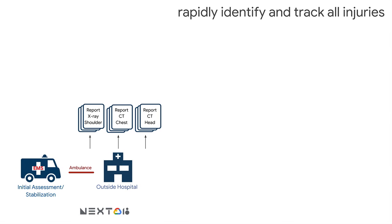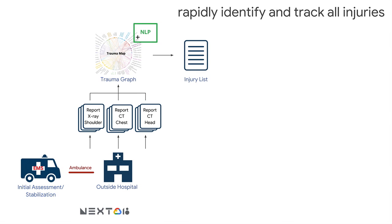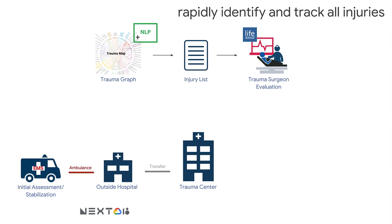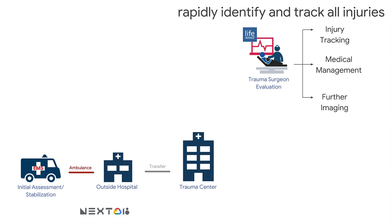We can put that directly into the existing trauma workflow. When a patient is injured, they go from the field to a nearby hospital, where they receive multiple imaging modalities — an X-ray of the shoulder, a CAT scan of the chest, a CAT scan of the head — and radiologists create radiology reports describing those injuries. Our technology takes this information, combines it with the trauma graph data, and creates an injury list with associated injuries. When the patient is transferred to a trauma center, I have access to this injury list at the point of care, enabling better injury tracking and decisions about further imaging or continued medical management.